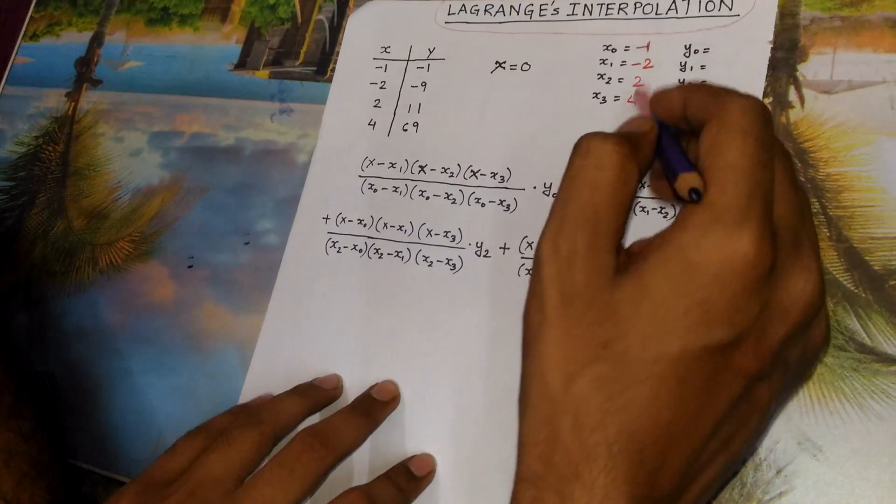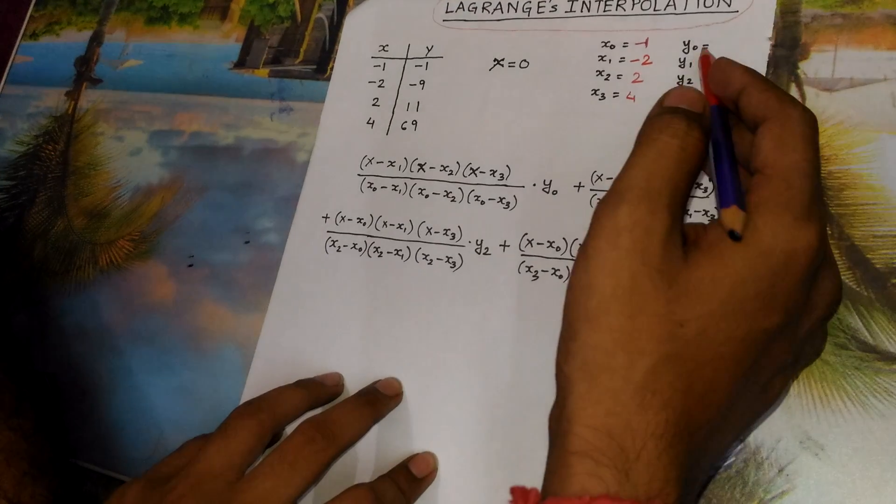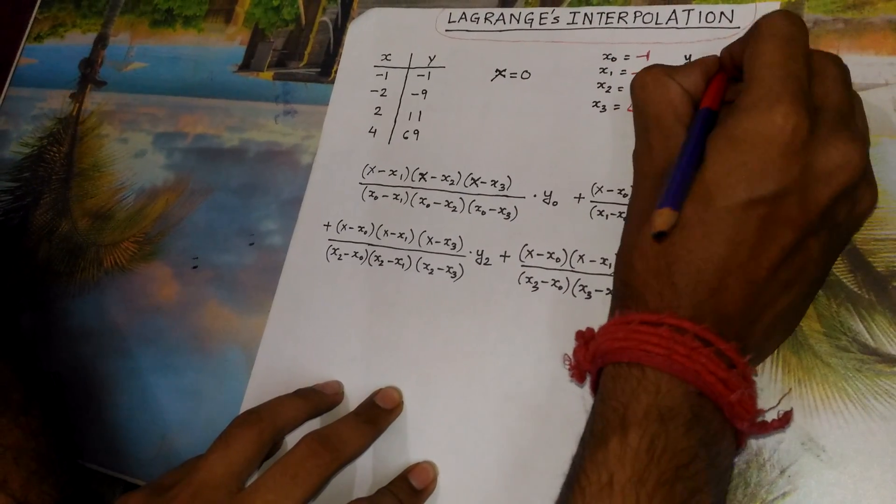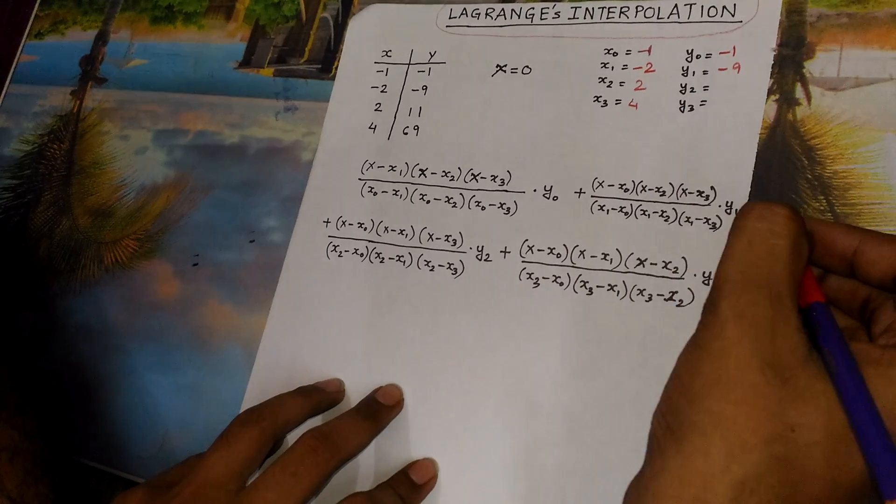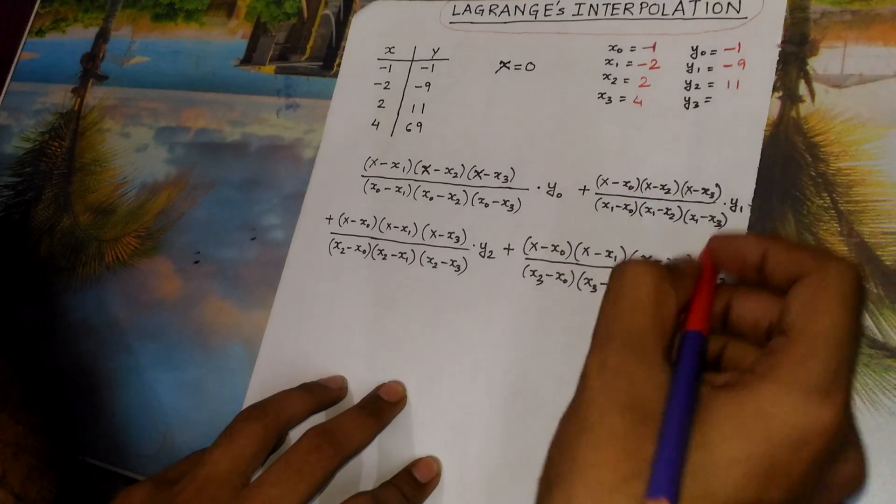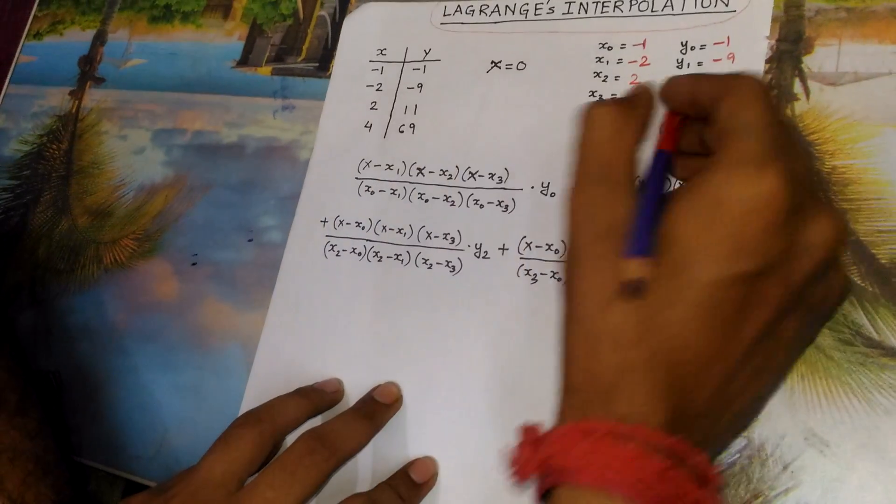From this table I have filled up this. And now for y, y0 is minus 1, y1 is minus 9, y2 is 11, and y3 is 69.